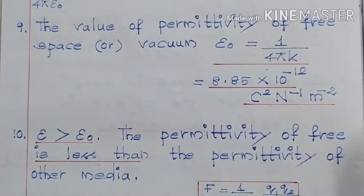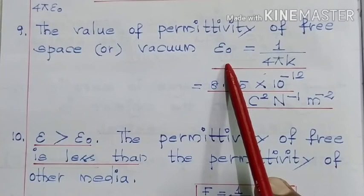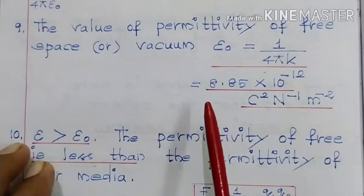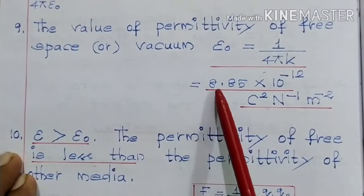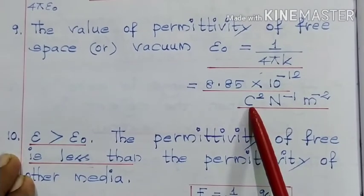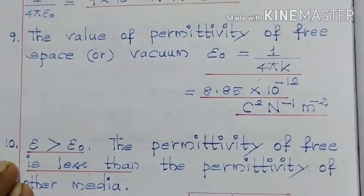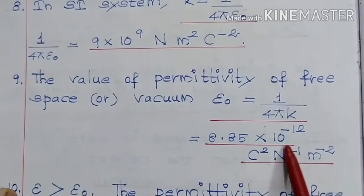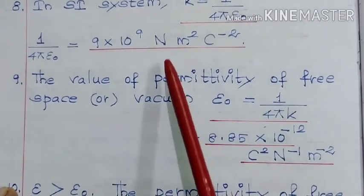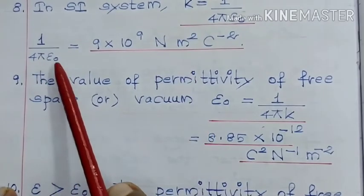The value of permittivity of free space or vacuum, that is ε₀, is equal to 1/(4πK), which is equal to 8.85 × 10^-12 Coulomb squared per Newton meter squared. Here, the unit of this ε₀ is nothing but the reciprocal of this unit, that is the unit of K, 1/(4πε₀).